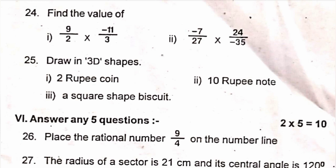24, find the value of 9 by 2 into minus 11 by 3. Then second, minus 7 by 27 into 24 by minus 35.